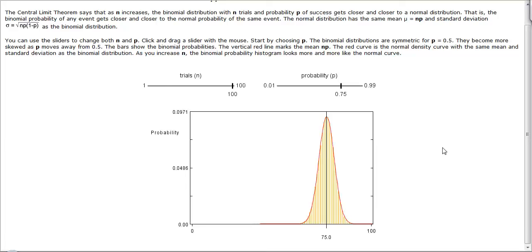This is what the central limit theorem is trying to tell us: when you have a binomial distribution, you have a histogram, because it's a discrete data set. As you increase the number of trials in this binomial probability with a fixed chance of success, the histogram will start to approximate a normal density.